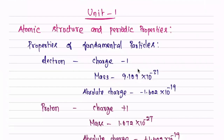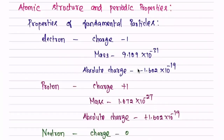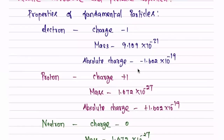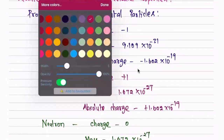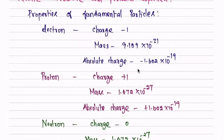We are going to look at the atomic structure and the fundamental particles. The charge of the electron is minus 1.